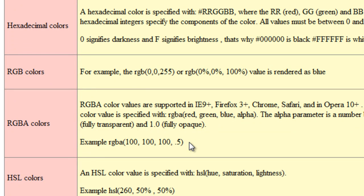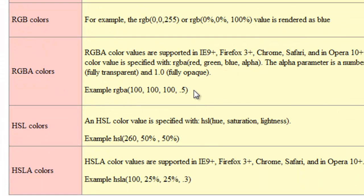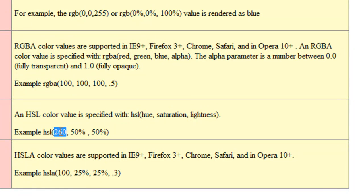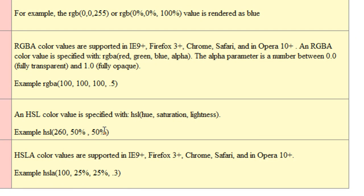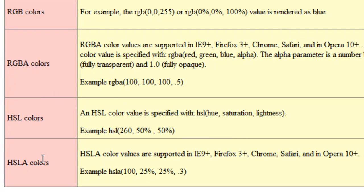Then we have the HSL color model — Hue, Saturation, and Lightness. The hue value can be between 0 and 360, like a color wheel. Saturation and lightness — or luminosity as some call it — can be a value between 0 and 100 percent. The first value is a number; the second and third are percentages. Finally, HSLA adds an alpha channel — for example: HSL(125, 25%, 25%, 0.3).